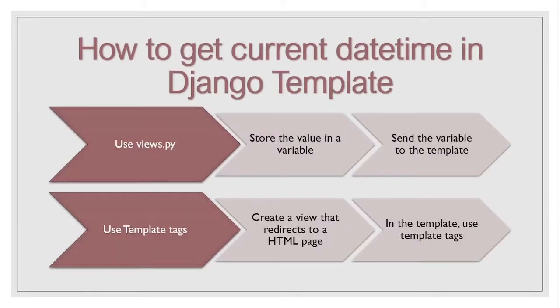The next topic is how to get the current datetime value in a Django template. To fetch the current date, time, or datetime value in a template, we have two approaches. The first is using the views.py file — creating a variable that stores the current datetime value and returning it to the template. The second approach is using template tags directly in the template to get the result.